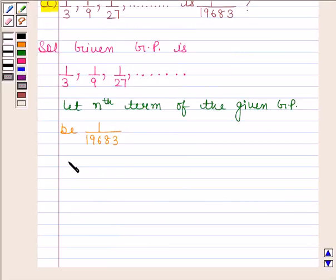the first term, that is A, is equal to 1 by 3 and R is equal to 1 by 9 divided by 1 by 3, and this is equal to 1 by 9 into 3, and this is equal to 1 by 3.